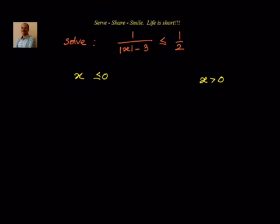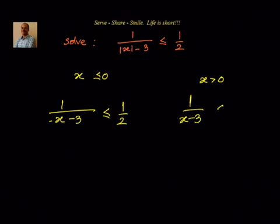When x is less than 0, the absolute value of x equals minus x. So we write 1 divided by (minus x minus 3) is less than or equal to 1/2. When x is greater than 0, the absolute value of x equals x, so it is 1 divided by (x minus 3) is less than or equal to 1/2.